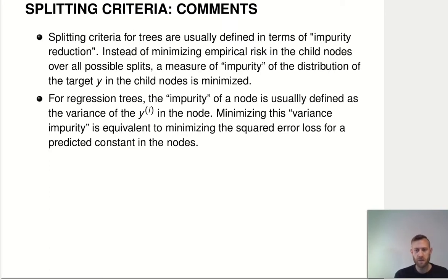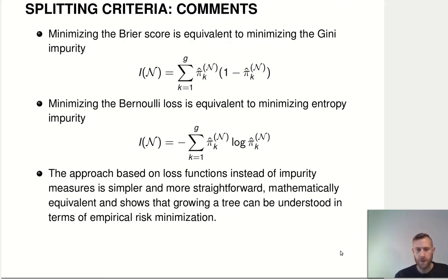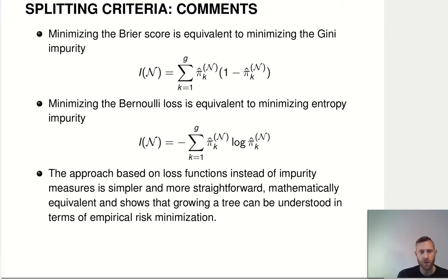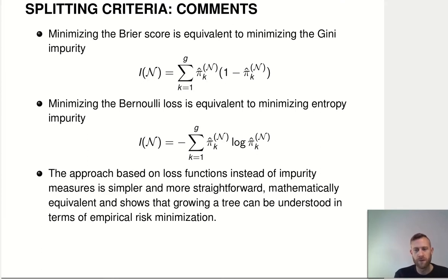We teach the empirical risk minimization perspective because it's more general and easier to connect to other parts of machine learning, without needing new vocabulary about impurity reduction. Concretely: minimizing the Brier score is equivalent to minimizing the Gini impurity, and minimizing the Bernoulli loss is equivalent to minimizing entropy impurity. So you now know which options to select when building such a tree, and we can understand tree building fully in terms of empirical risk minimization.